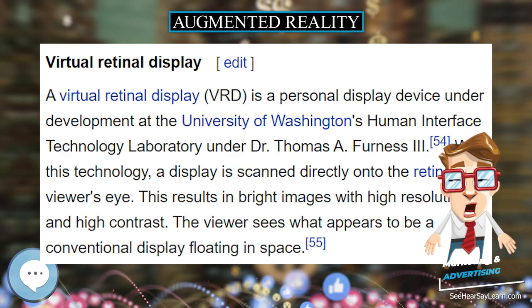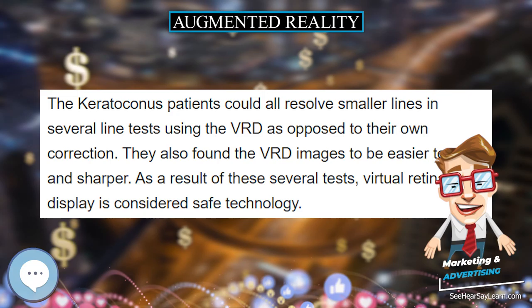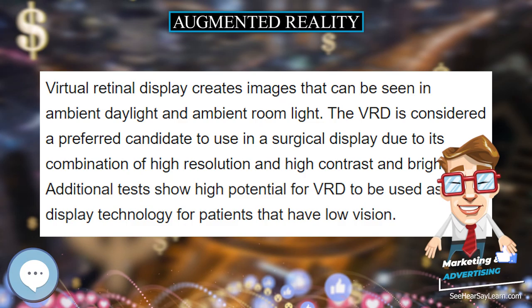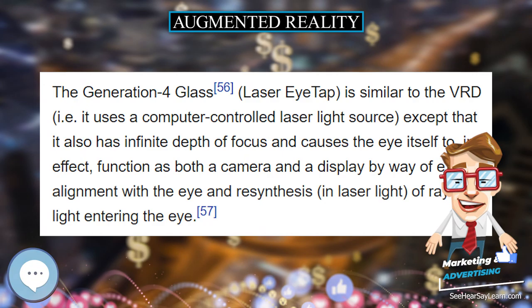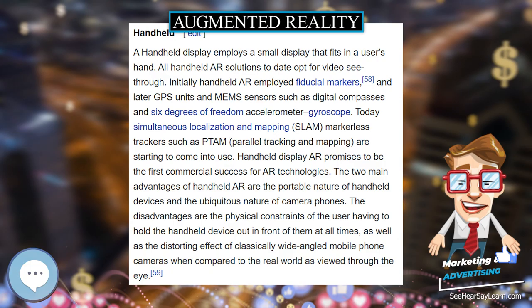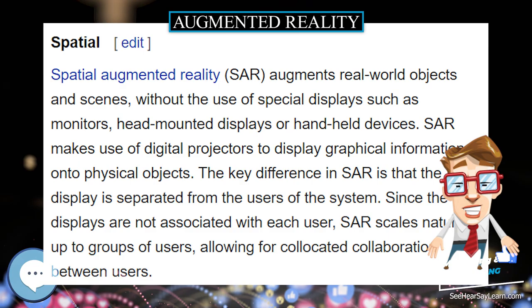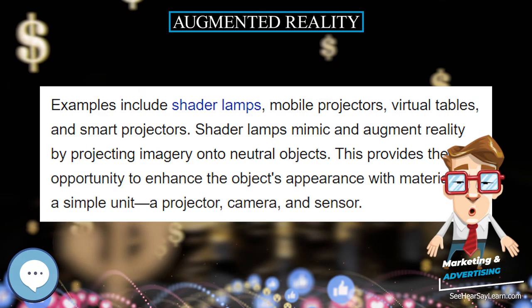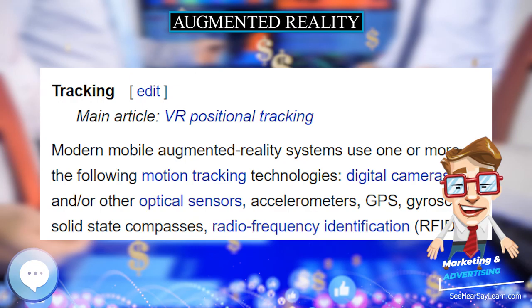Immersive perceptual information is sometimes combined with supplemental information like scores over a live video feed of a sporting event. This combines the benefits of both augmented reality technology and heads-up display (HUD) technology. The difference between virtual reality and augmented reality: in VR, the user's perception of reality is completely based on virtual information. In AR, the user is provided with additional computer-generated information that enhances their perception of reality. For example, in architecture, VR can be used to create a walkthrough simulation of the inside of a new building, and AR can be used to show a building's structures and systems superimposed on a real-life view.